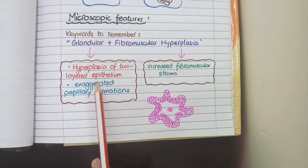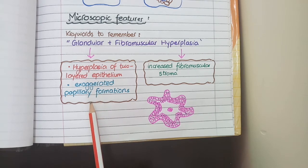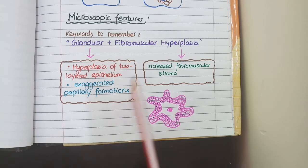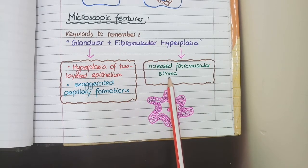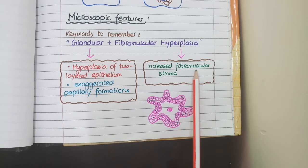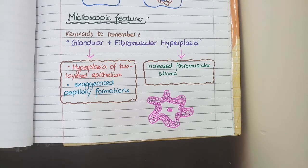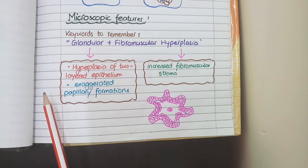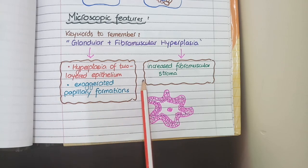So you see hyperplasia of two-layered epithelium with exaggerated papillary formations. The second keyword is fibromuscular hyperplasia — you will see an increase in the amount of fibrous tissue and smooth muscles in the stroma. Overall in benign prostatic hyperplasia, you see hyperplasia of two-layered epithelium with exaggerated papillary formations and increased fibromuscular stroma.